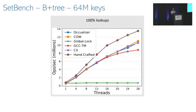When executing 100% lookups, all tested trees apart from the one using global locks show good scalability. This result stems from the fact that with only read-only operations, no locks or blocking mechanisms are used.